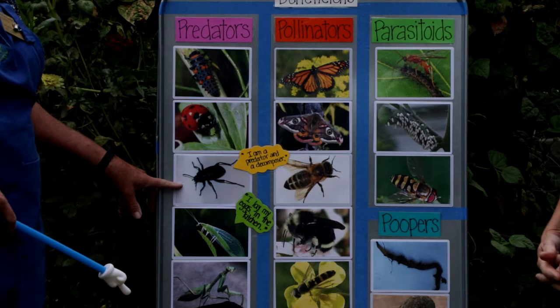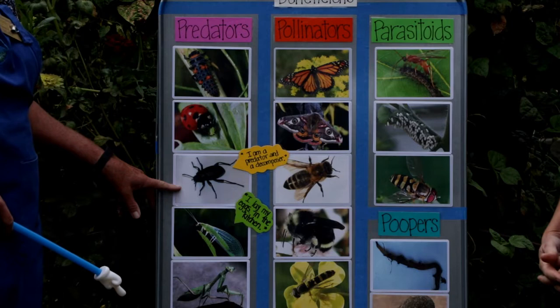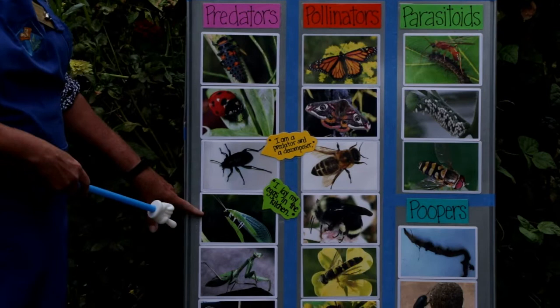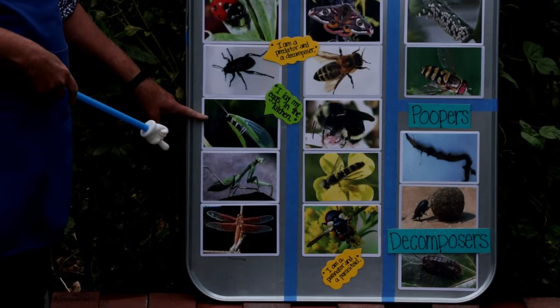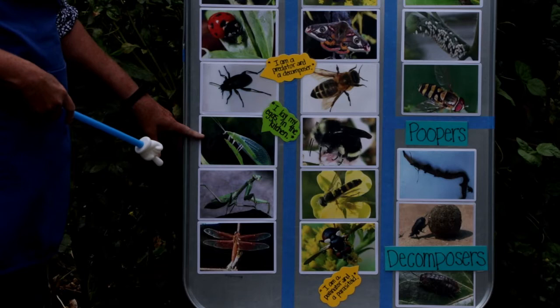Here we have a ground beetle. Some insects in the garden do more than one job — ground beetles are both predators, coming out at night and eating harmful insects, and they also decompose that plant matter they consume. The next one is a lacewing. They're very tiny and have a clever trick: not only do they eat harmful insects, they lay their eggs right where those harmful insects are, so when the larvae hatch, their meal is ready for them.